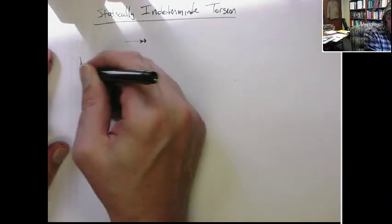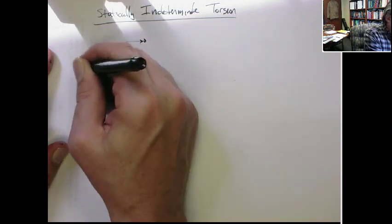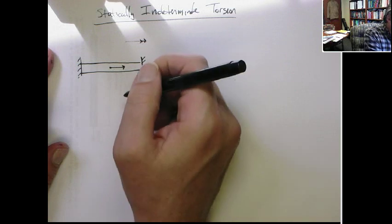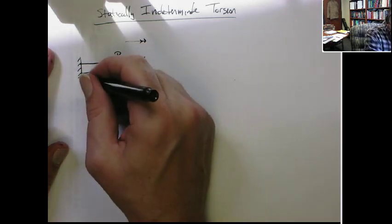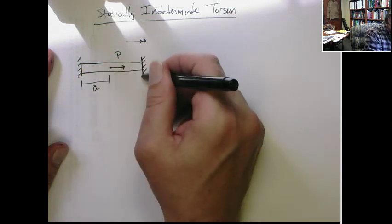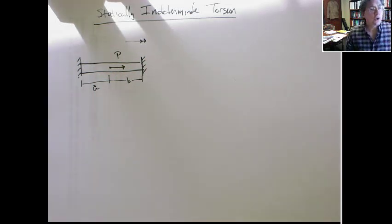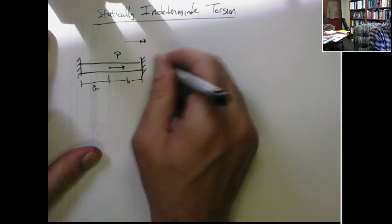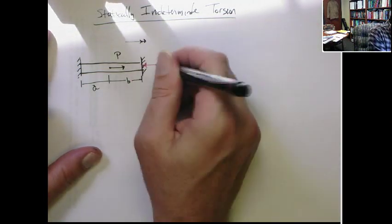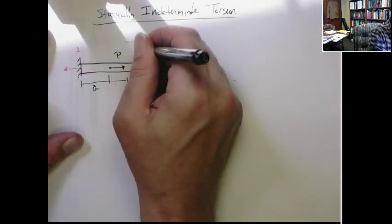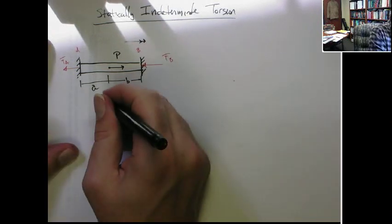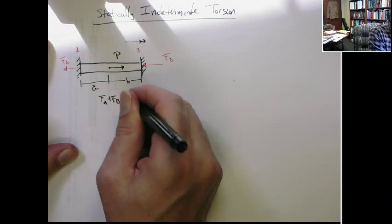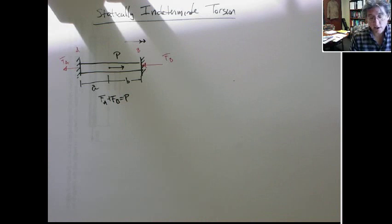Let's recall the axial situation. We had a bar fixed at both ends, and possibly some load in the middle. When you do the free body diagram, what you don't know is what are these two reactions. FA plus FB equals F. The issue is here, if we just do sum of forces in the x direction on the free body diagram, we have one equation, two unknowns. So that doesn't work.